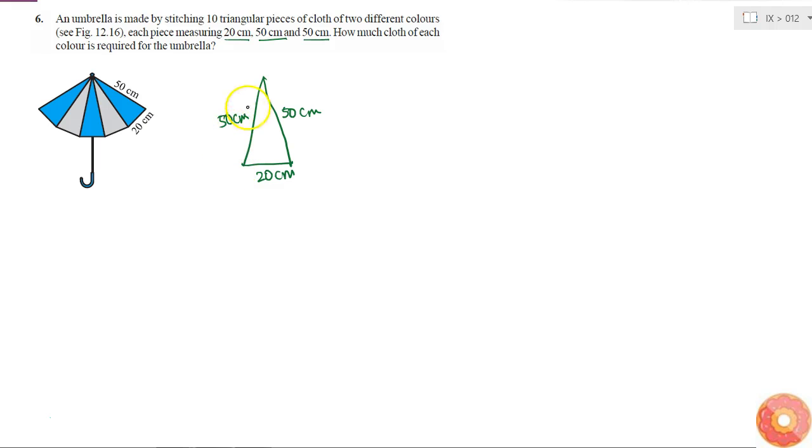So for this triangle, if I assume the sides are A as 50, B as this and C as this side, then I can calculate the area using the Heron's formula.